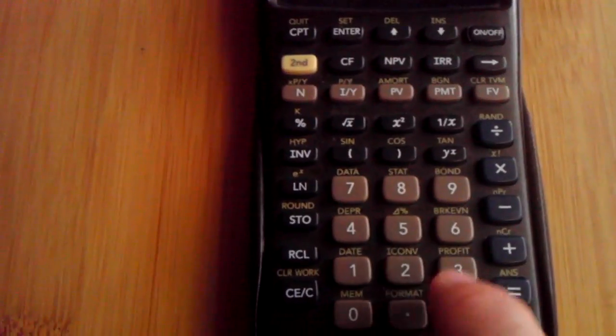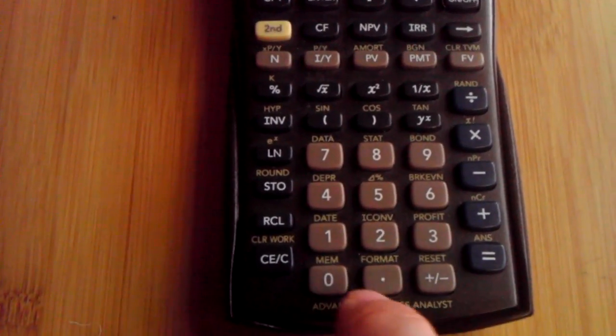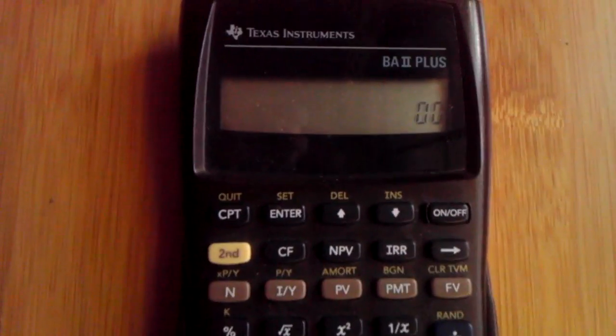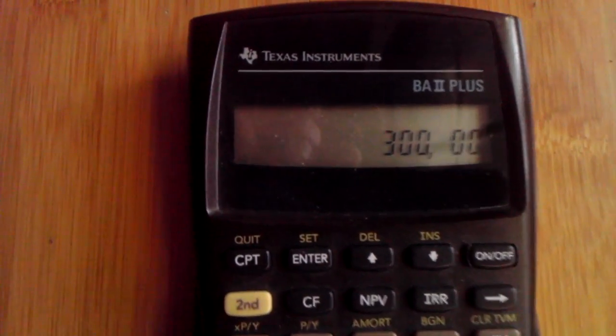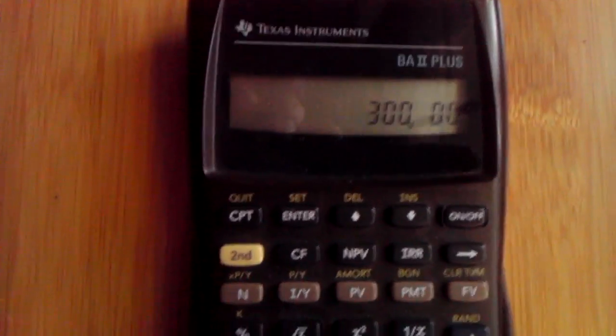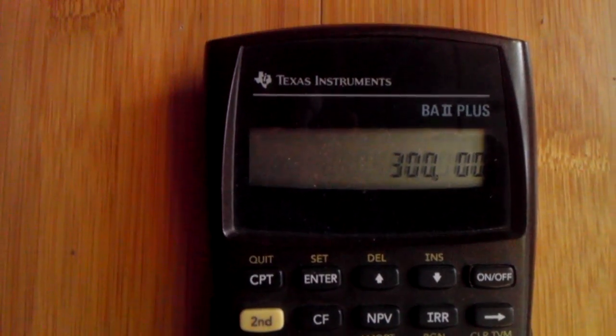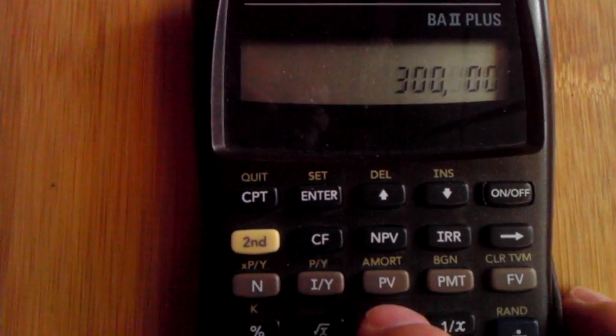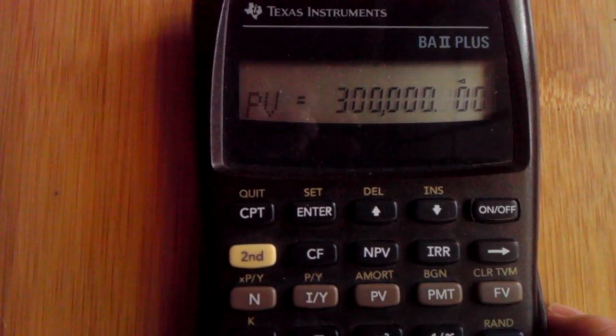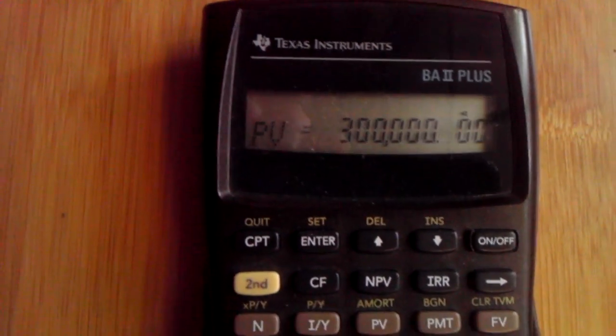You're just going to type in 300,000. Sorry, it's kind of hard to see my finger and film at the same time. So 300,000 and you're going to press the PV button.